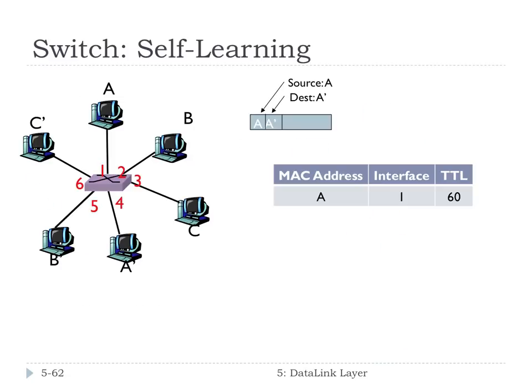So this slide kind of explains how if we have a frame from A and it's intended to go to A prime, when the switch receives this packet from A, it'll receive it on number one, then it immediately knows if I have a source packet that's A and it's on link and I received it on link one, then I know what link MAC address A is on. It's on one. So it's learned that.